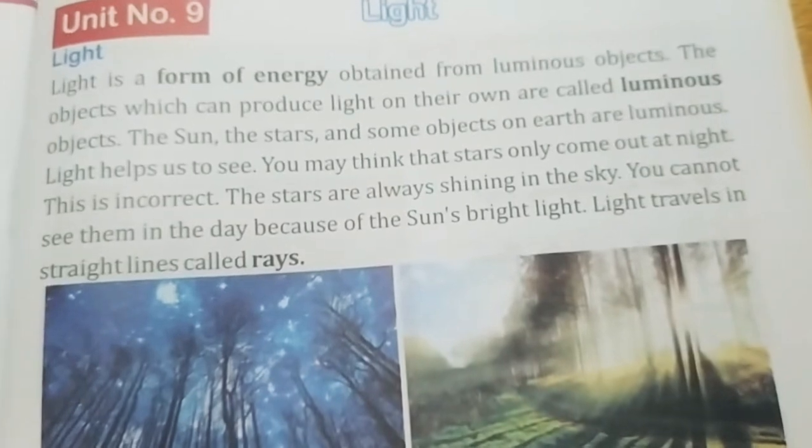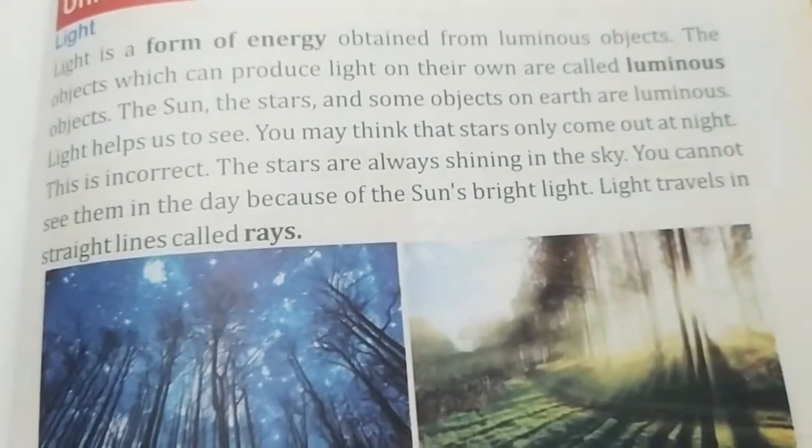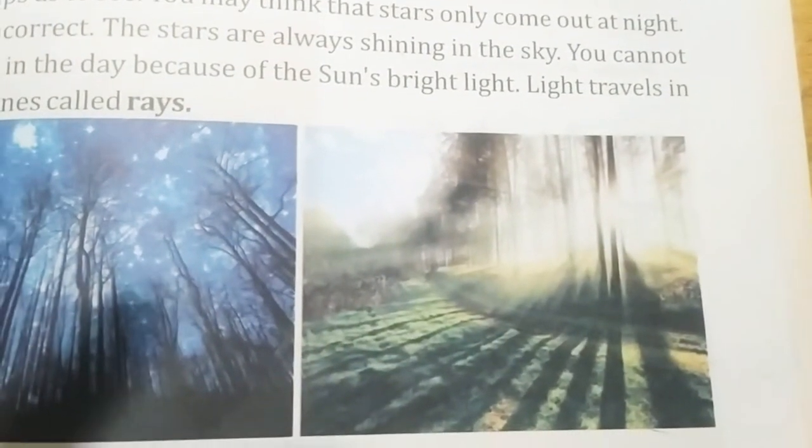Light is a form of energy obtained from luminous objects. Here in this picture you can see the stars are luminous, and in this picture the sun is a luminous object.